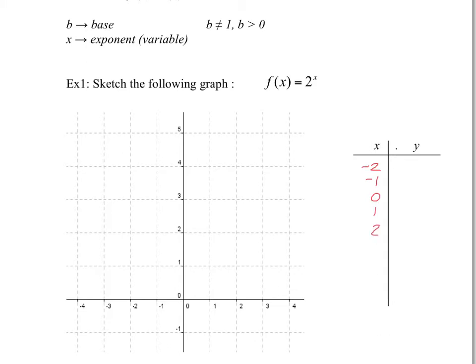If I plug in those values of x: 2 to the power of negative 2 is 1 quarter, negative 1 gives a half, 2 to the power of 0 is 1, 2 to the power of 1 is 2, and 2 to the power of 2 is 4. If you put 3 in, you would get 8.